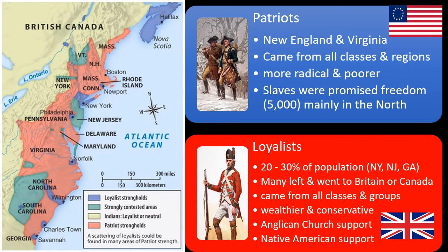American colonists became divided over the issue of independence as the war began. Two groups emerged during the conflict. Colonists who supported independence were known as patriots. They came mostly from New England and Virginia, from all social classes and regions, but they tended to be more radical and from a lower socioeconomic class. Slaves that joined the cause were promised freedom in the North.